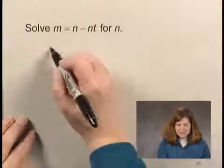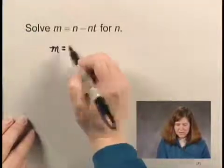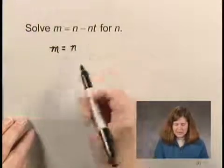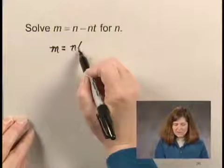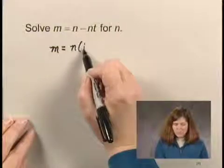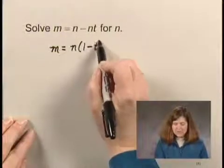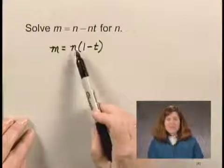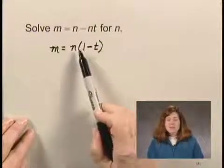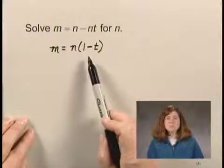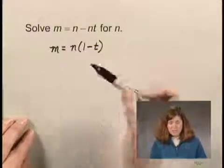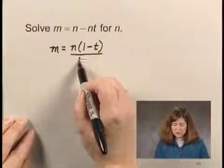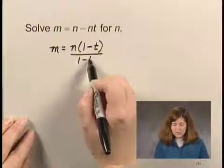So I'm going to factor an n out of here. This is going to be n times 1 minus t. Now this is n times an expression, so I can solve for n by dividing both sides by that expression, 1 minus t.